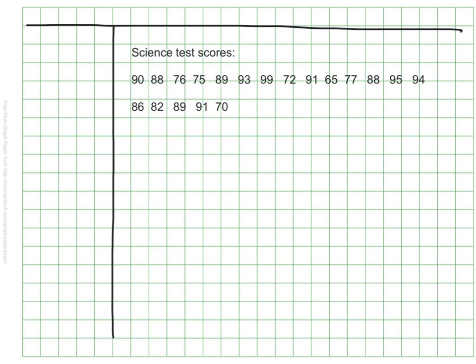The first thing, once we have it all written down, that we want to find is the range. We want to find the highest and lowest score. In this case, the lowest score was 65, and the highest score was 99. I need to make sure my histogram covers that range.